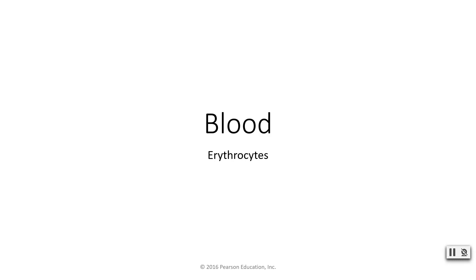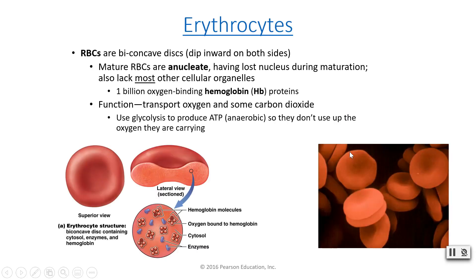In this lecture, we will discuss erythrocytes, also known as red blood cells. Erythrocytes, or red blood cells, or RBCs, are biconcave discs, meaning that they dip in on both sides. Concave means to dip inwards, so we can see they dip in on both sides.